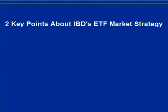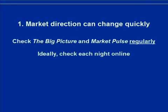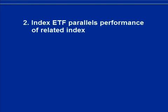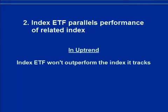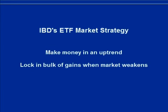Here are two important things to understand about this ETF market strategy. First, market direction can change quickly, so it's important that you check the Big Picture and market pulse regularly — ideally, take a minute to check it each night online. Second, the performance of an index-based ETF basically parallels the performance of the index itself. So when the market is in an uptrend, that ETF by definition won't outperform the related index. But when a downtrend hits, that's when IBD's strategy can be very helpful. Instead of riding that ETF back down and watching most, if not all, of your prior gains disappear, you move safely to the sidelines. You make money when the market is in an uptrend, and you lock in the bulk of those gains as the market begins to weaken.